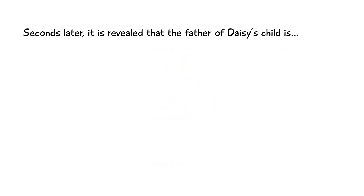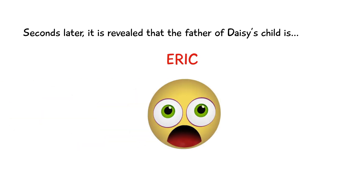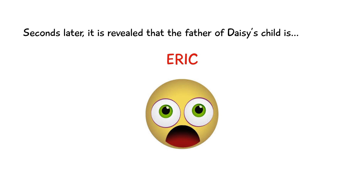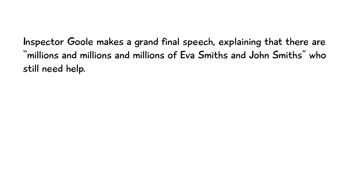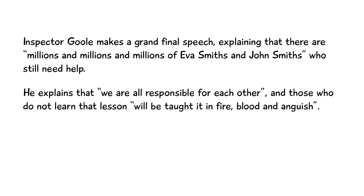Seconds later it's revealed in the climactic moment of the play that the father of Daisy's child — the father who Mrs Birling believes should accept complete responsibility — is in fact Mrs Birling's only son Eric, who just so happens to walk in through the door at that very moment. The Inspector turns his attention to Eric, who reveals that he met Daisy in a bar. After this meeting, whilst he was drunk, he forced his way into Daisy's room and had sex with her. He also explains that he gave her money that he stole from his father's business. However, after a while Daisy ended the relationship with Eric because she believed that he did not love her. The Inspector then makes a grand final speech explaining that there are millions of Eva Smiths and John Smiths who still need help. He explains that we are all responsible for each other, and that those who do not learn that lesson will be taught it in fire, blood and anguish. And with that, the Inspector leaves.